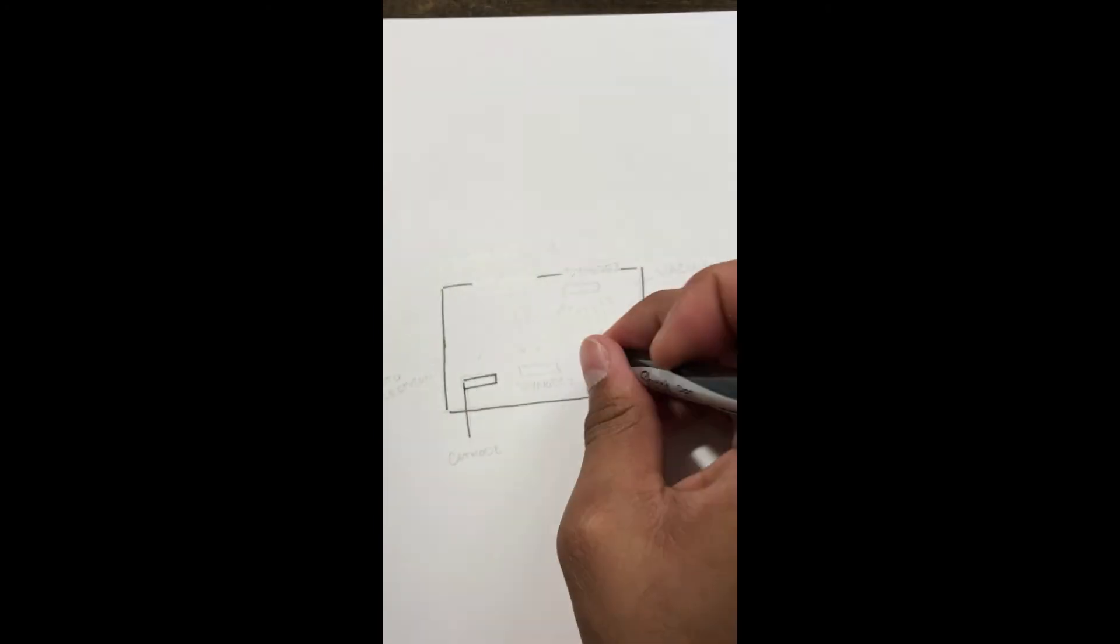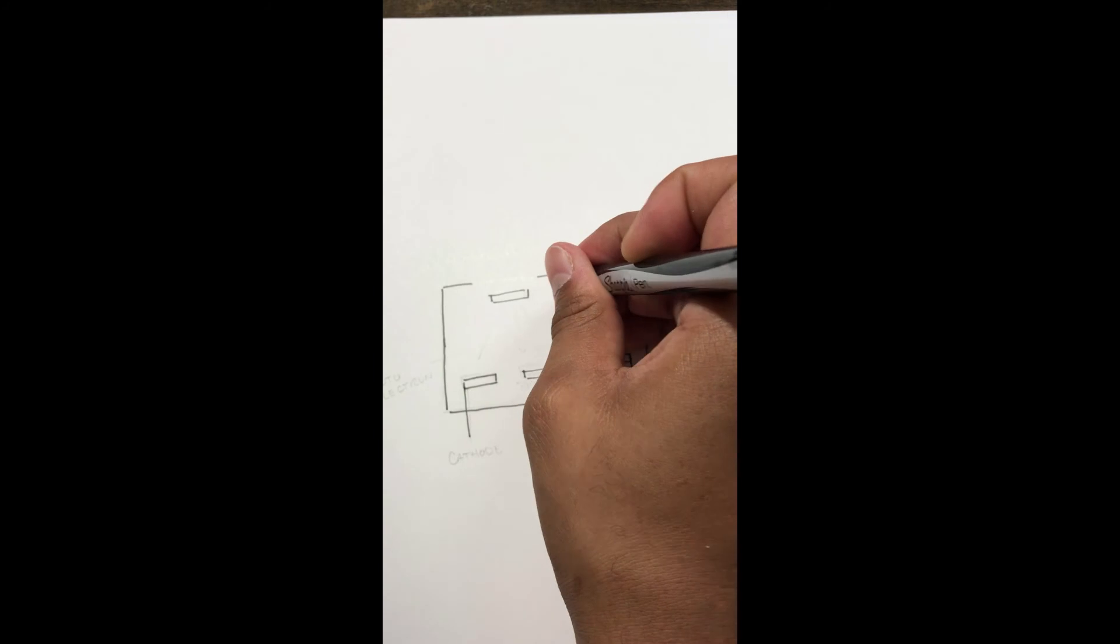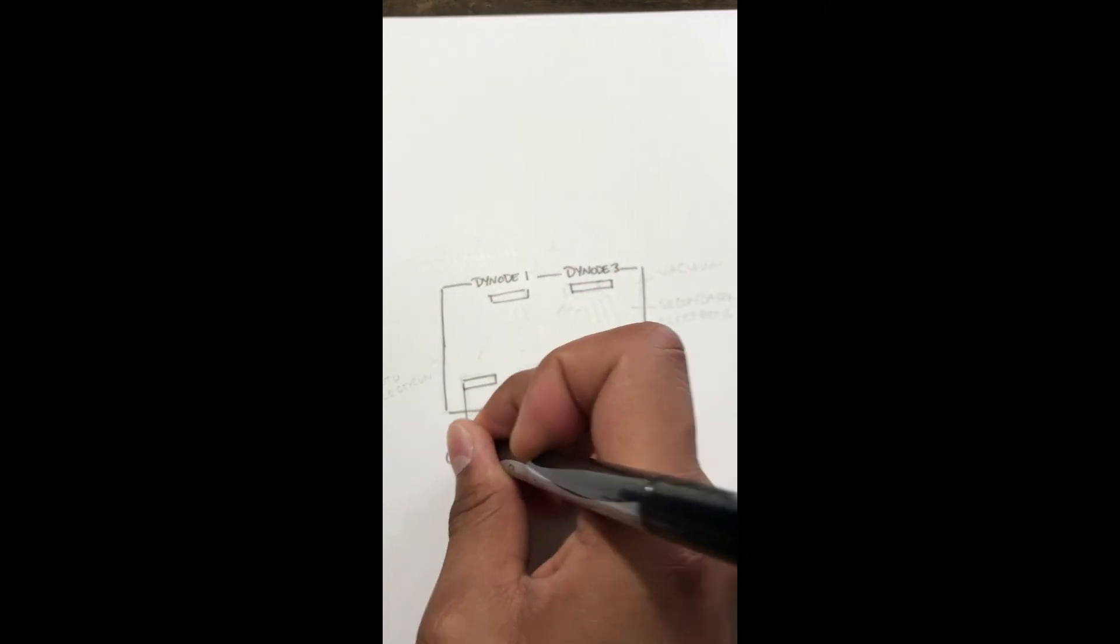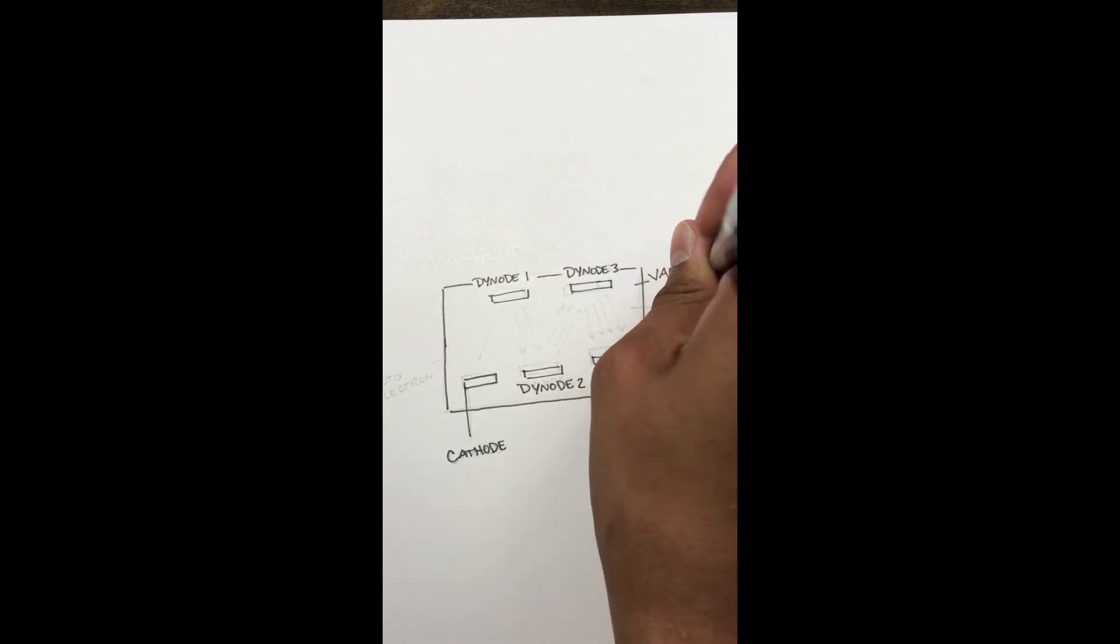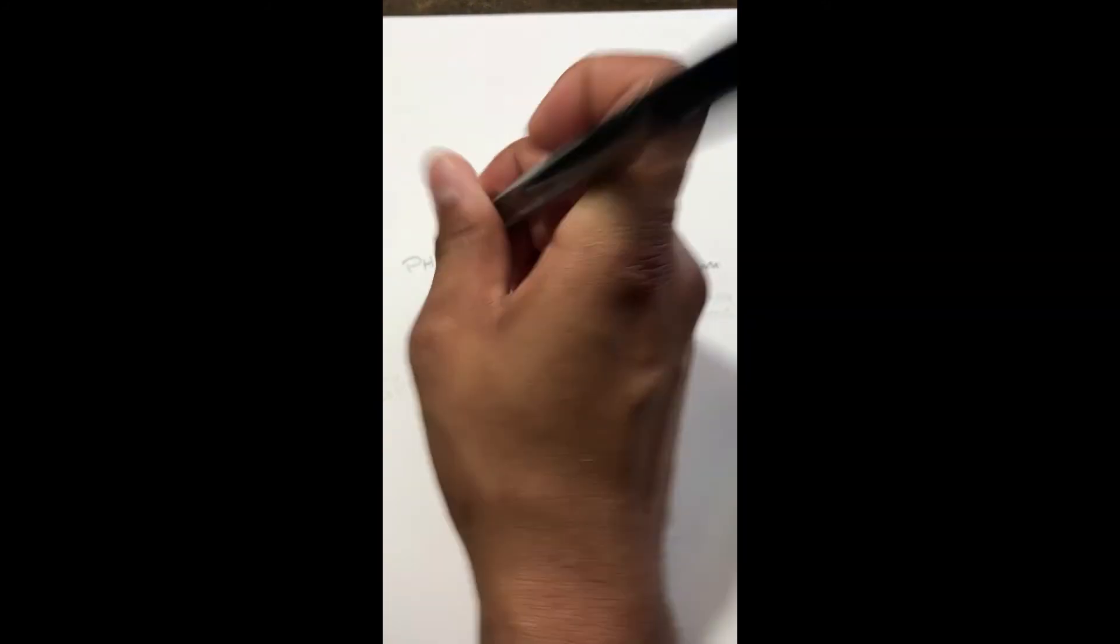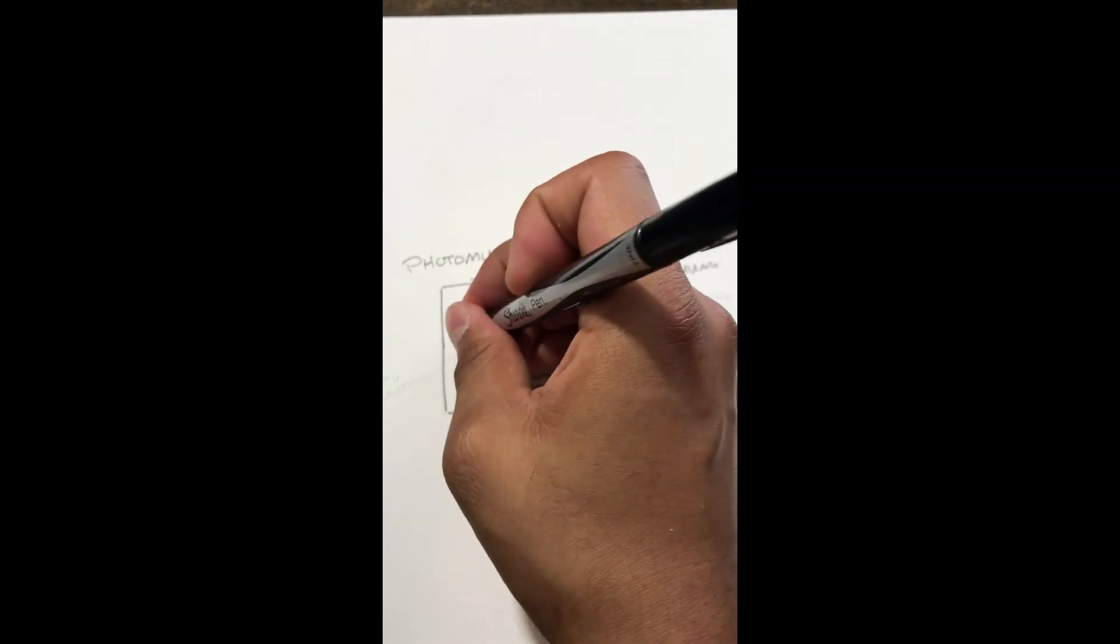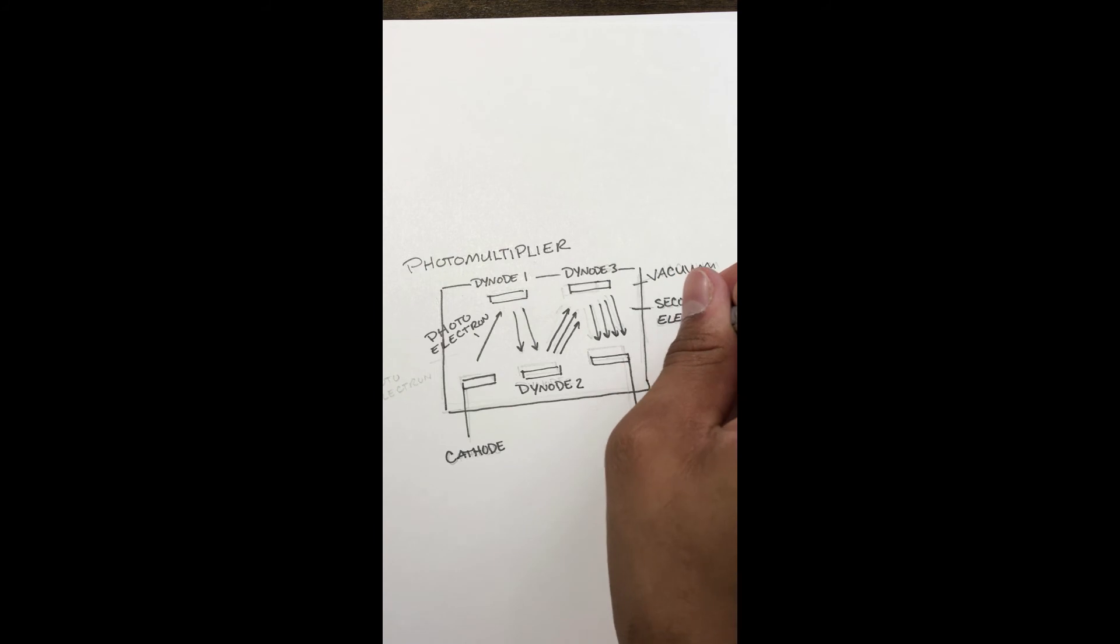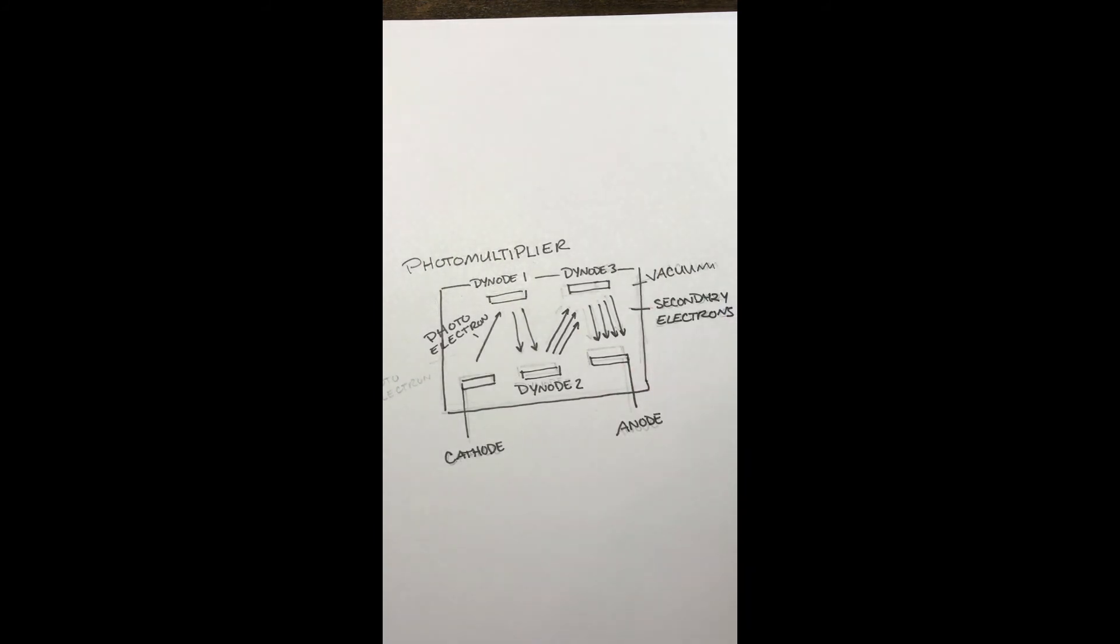Photomultipliers can amplify the current because of secondary emitting sources known as dynodes. These are arranged such that electrons from each dynode go to the next dynode in series. So as one electron is emitted from the cathode and accelerated by an applied voltage, its impact on the first dynode causes the emission of many secondary electrons and their impact on the next dynode multiplies the number of emitted electrons even more, leading to an increase in current.